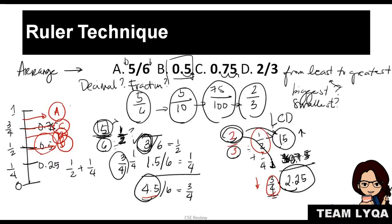So the arrangement, if we arrange from least to greatest, the answer would be: start from the bottom, you start with B, then D, C, then A. If greatest to least, it would be A, C, D, B. That's the way you can solve the ruler technique.